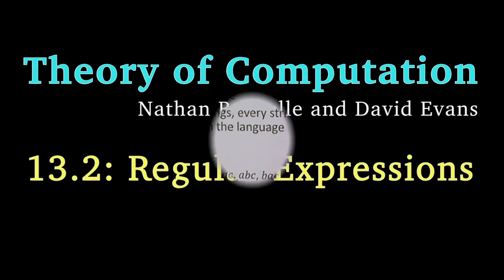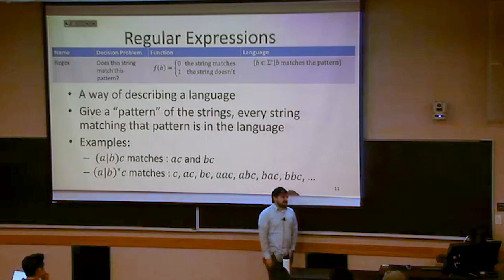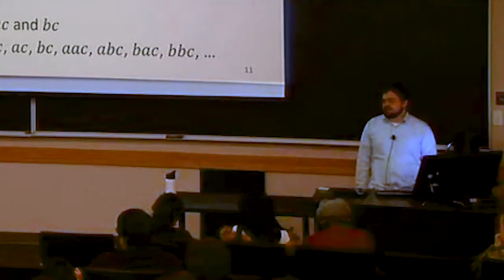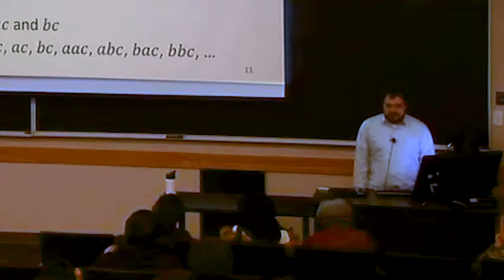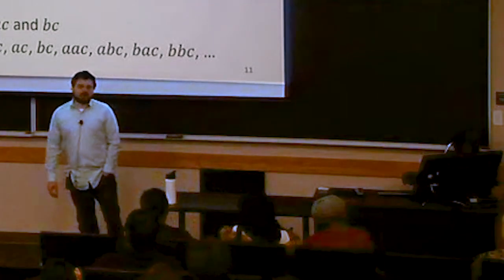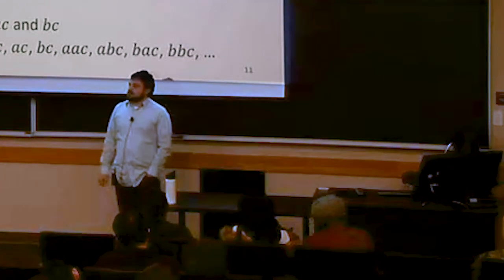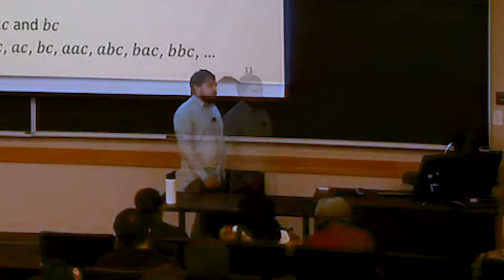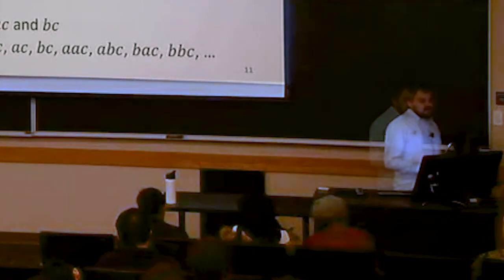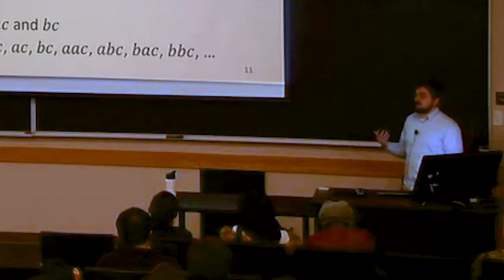We've shown that we can do any finite function with finite state automata, and we can do some infinite functions too. But we know we're not going to be able to do everything — no matter what our model of computing is, there are going to be things we can't compute. So we might ask: what are those things we can't compute?